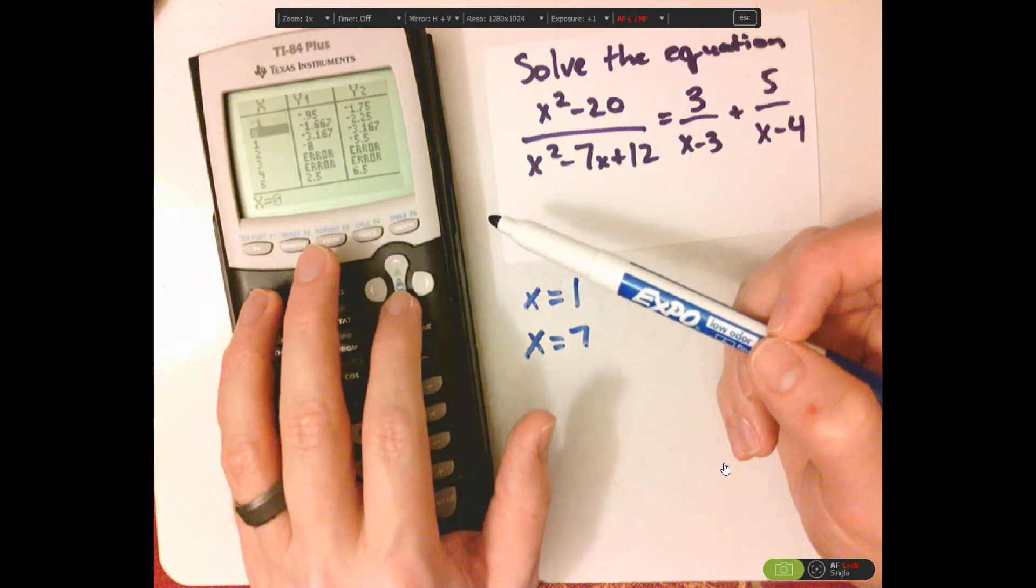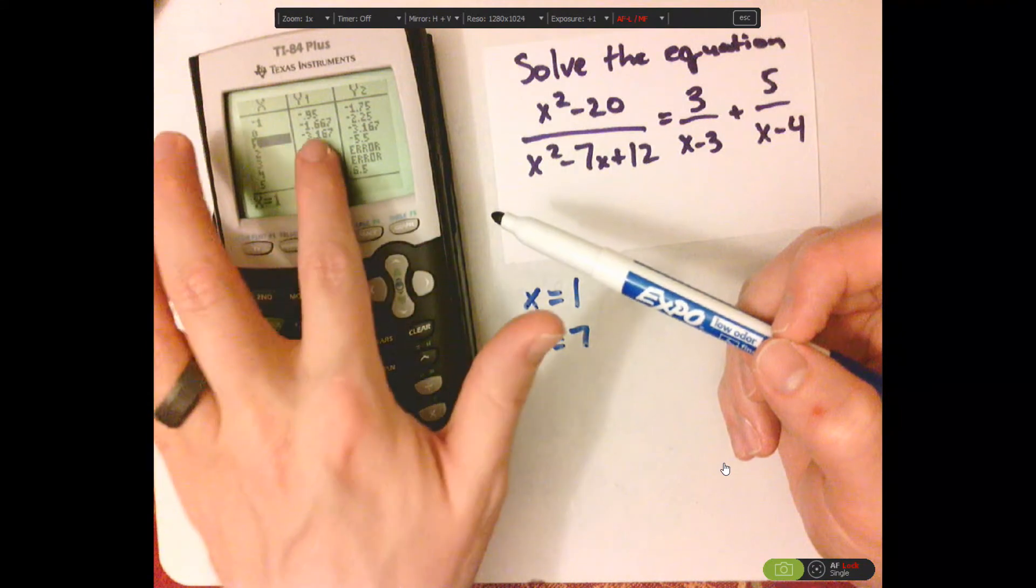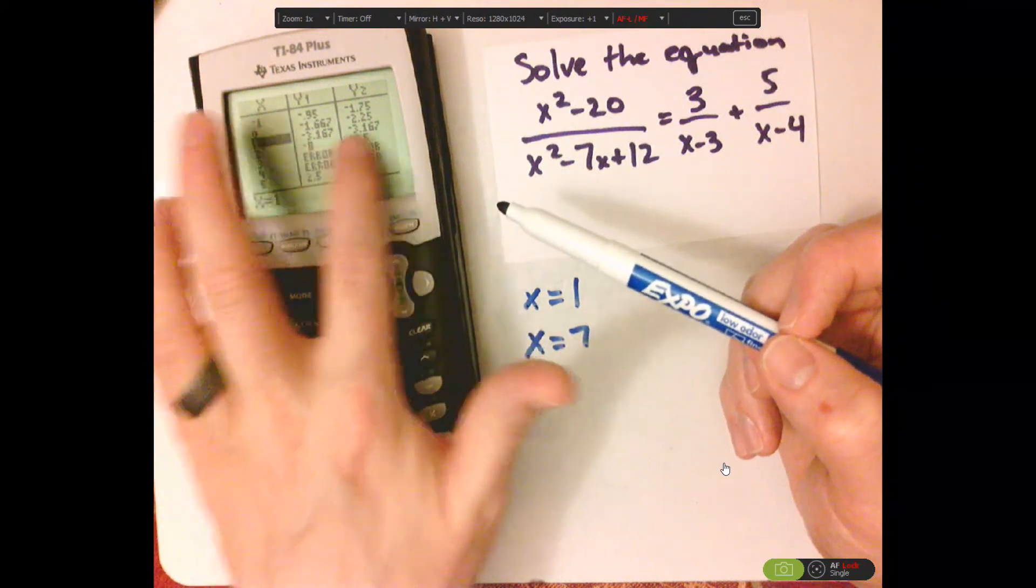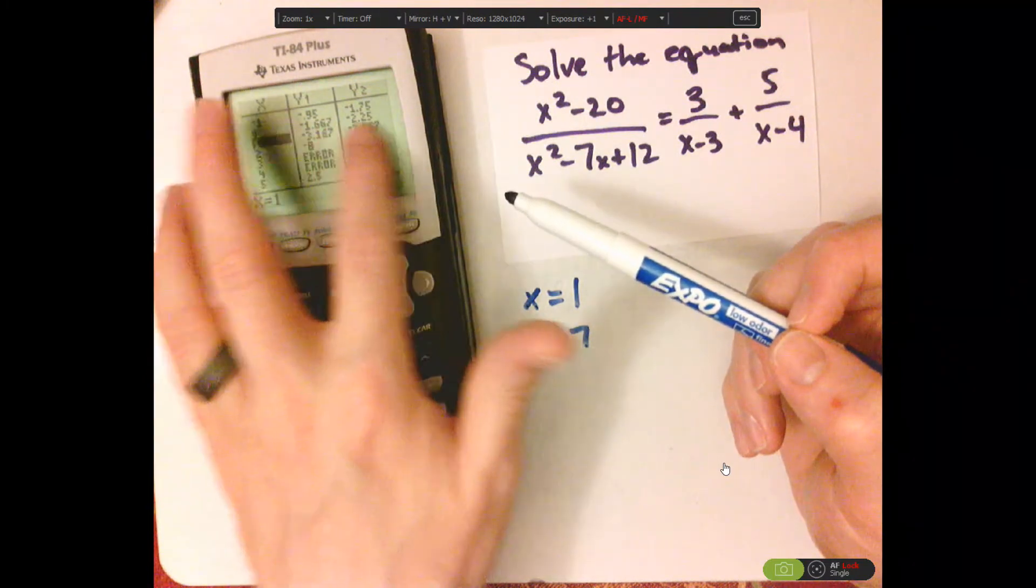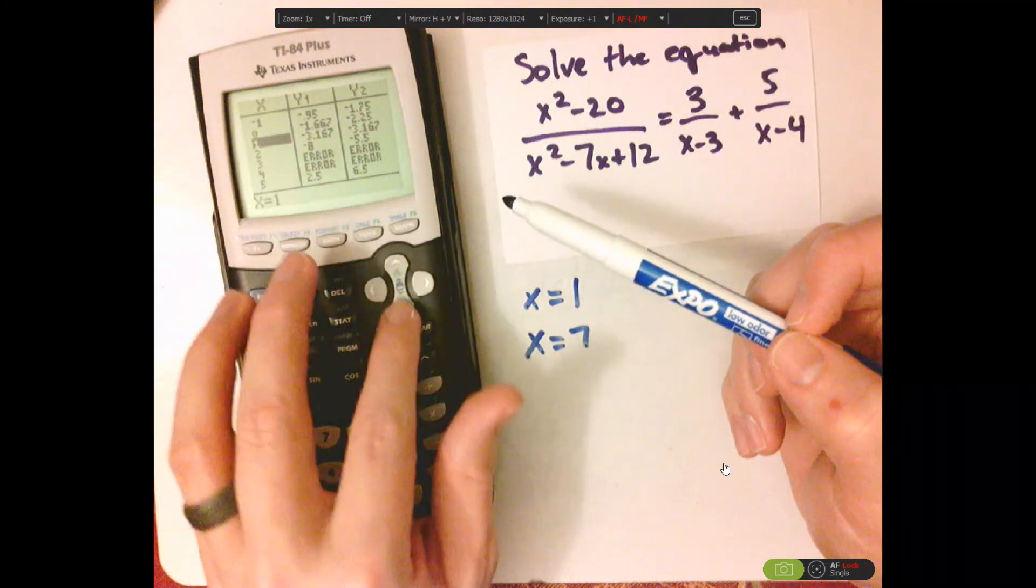And, if I go to 1, see how they're the same? That's what we're after. We're after them being equal on both sides. So, they're equal there, x equals 1.